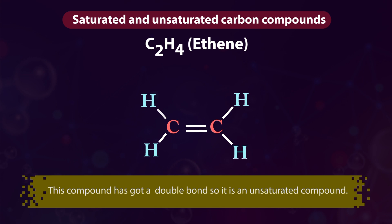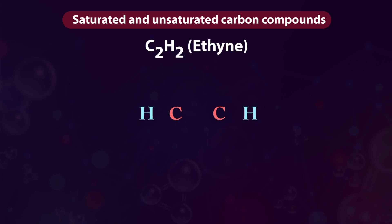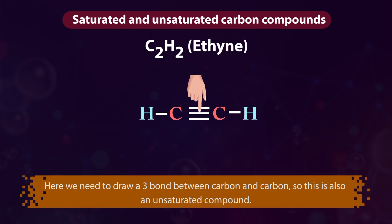In the same way, let us draw the structure for C2H2 — Ethyne. Here we need to draw a triple bond between the two carbon atoms, so this is also an unsaturated compound.